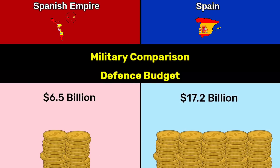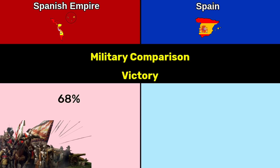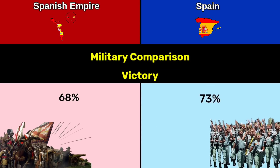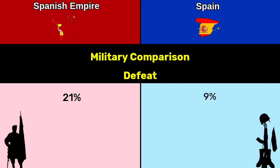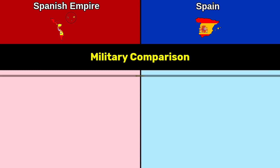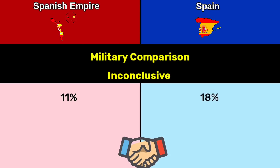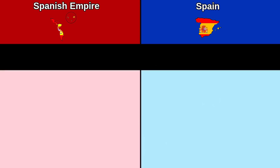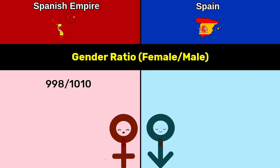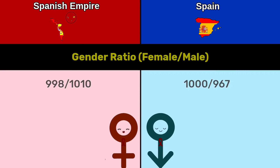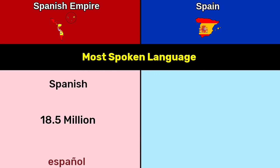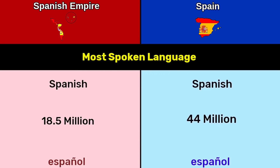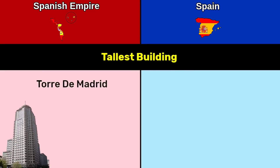Victory rate: Spanish Empire 68%; Spain 73%. Defeat rate: Spanish Empire 21%; Spain 9%. Inconclusive: Spanish Empire 11%; Spain 18%. Gender ratio: Spanish Empire 998 per 1,000; Spain 967 per 1,000. Most spoken language: Spanish Empire 18.5 million speakers; Spain 44 million speakers.